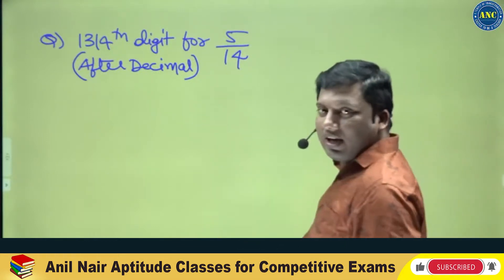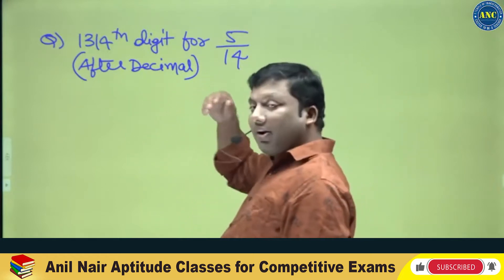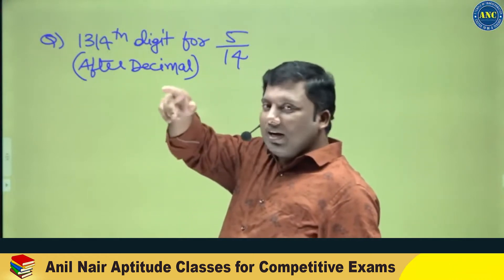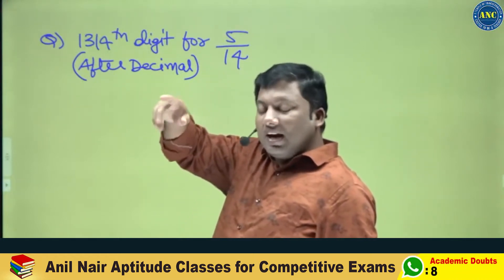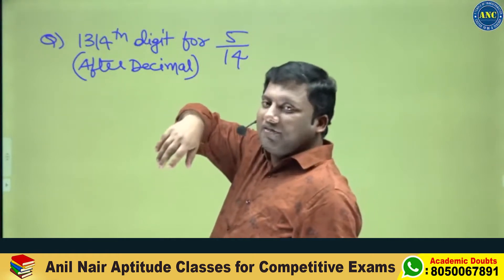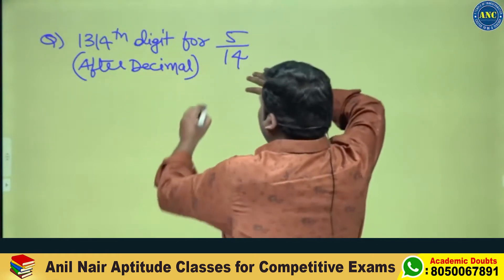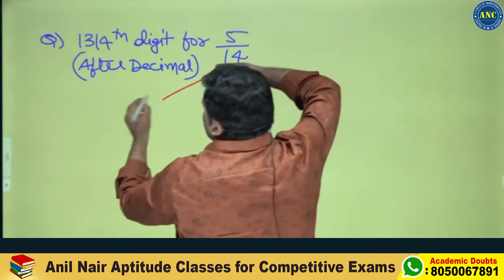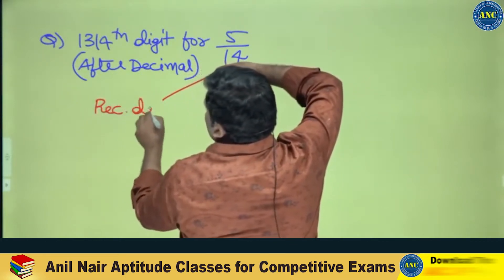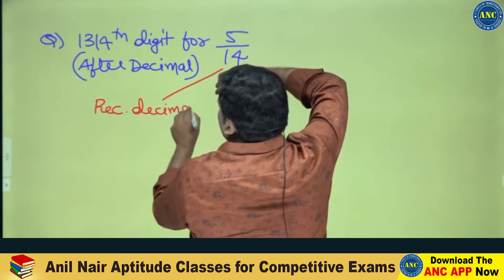Now listen carefully. It seems like they will not solve this. First of all, 14 is a combination of 2 and 7. Only 2, or only 5, or powers of 2 and 5 give a terminating decimal. So definitely this is a recurring decimal.